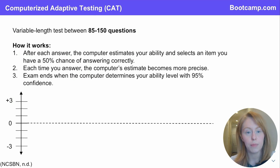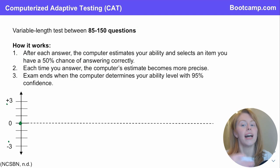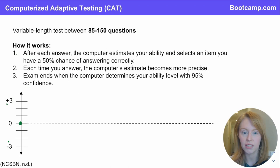And right now, the passing standard ability level is set at zero on a scale where a higher number indicates a higher ability level and a lower number indicates a lower ability level. So everyone who first opens their NCLEX — everyone's first question is going to be at around this zero ability level, this passing standard level. Then after every answer that you give, the computer estimates your ability and then selects the next item based on what it thinks you have a 50% chance of answering correctly.